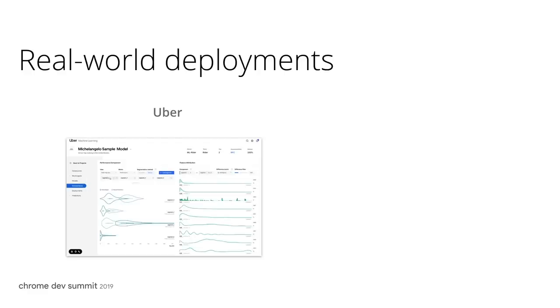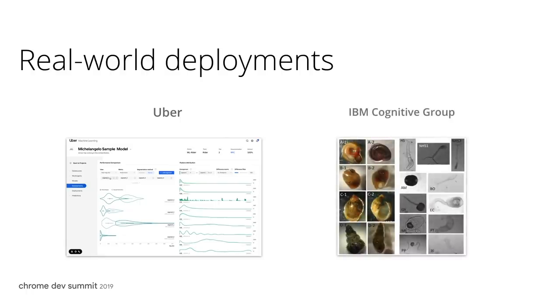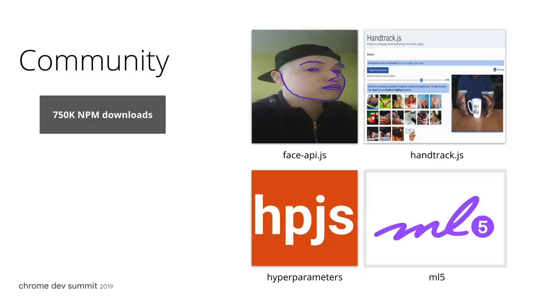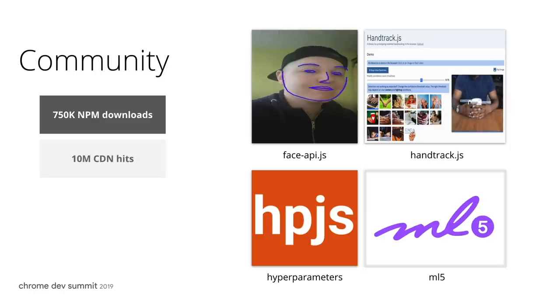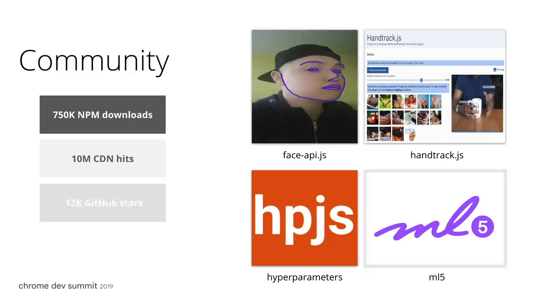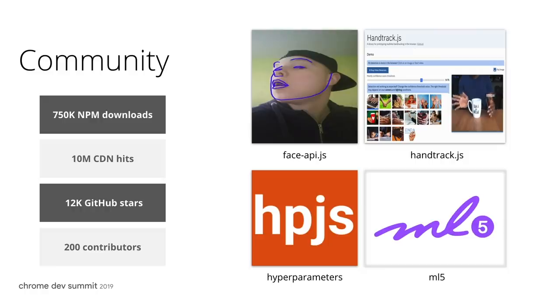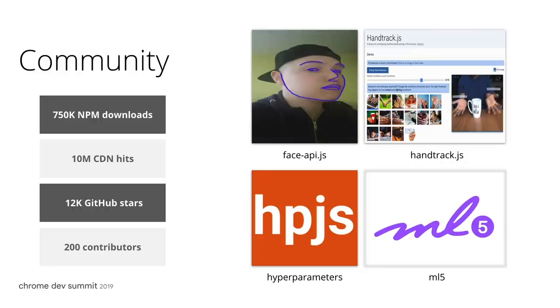Companies are using TensorFlow.js for a variety of purposes, whether it be for internal tools for experimentation and visualization at Uber, privacy-preserving client-side applications at Airbnb, or offline mobile device use cases for field use by IBM Research. The success of the library is due to our amazing contributor and user community. The library continues to grow in usage and popularity, and we are really excited about the amazing libraries that the community is building on top of TensorFlow.js to extend its functionality and applications.